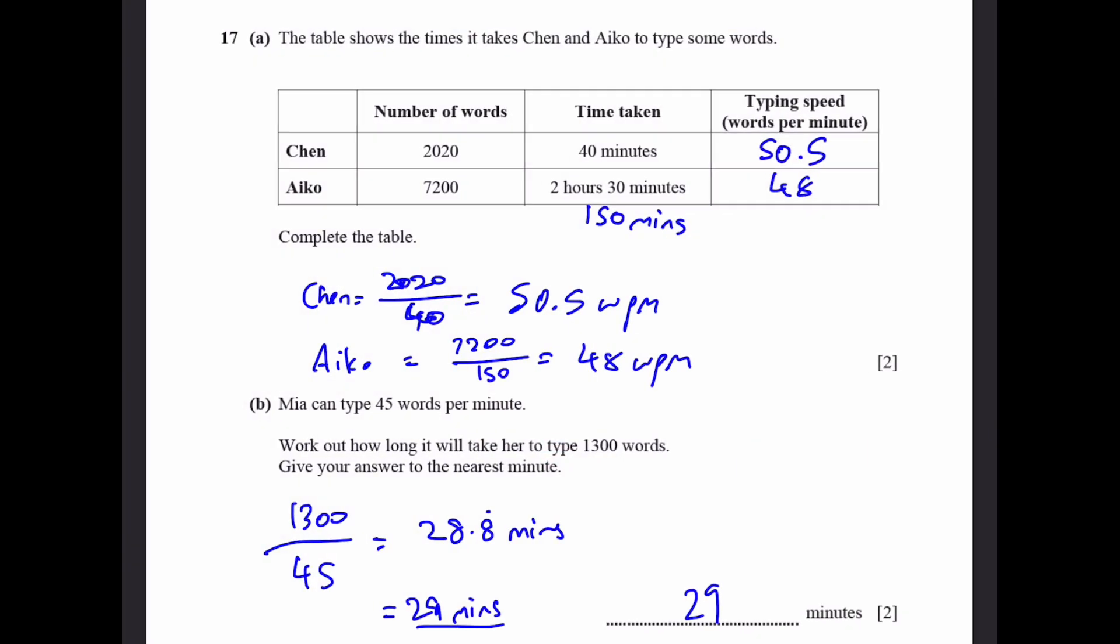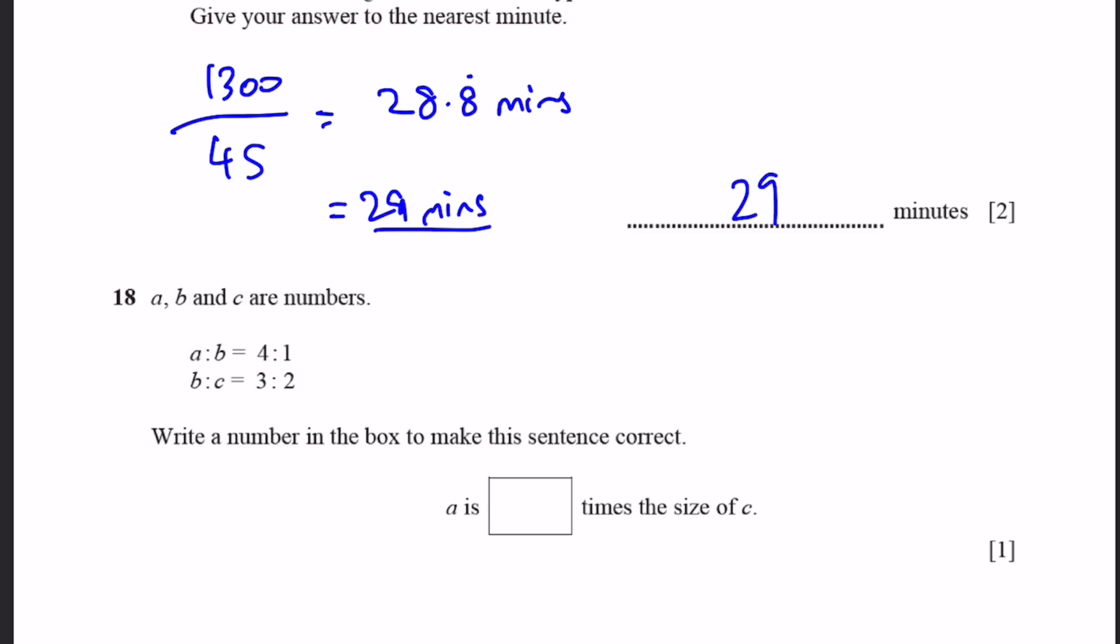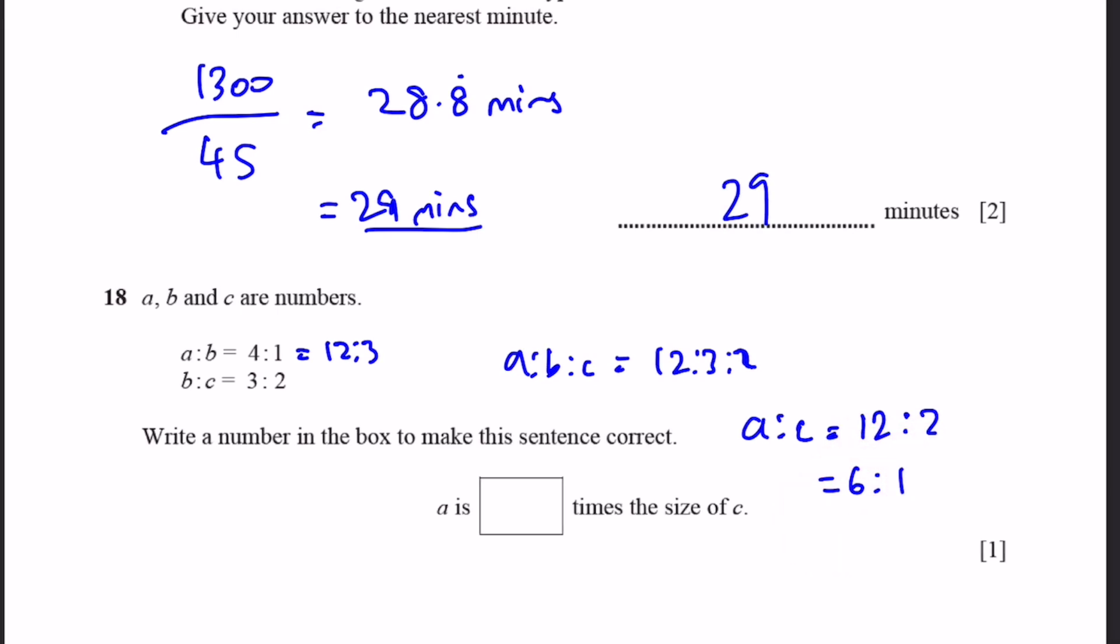Question 18. A, B, and C are numbers. A is to B is 4 is to 1, and B is to C is 3 is to 2. Write a number in the box to make the sentence correct. A is dash times the size of C. A is to B is 4 is to 1. This can be written as 12 is to 3 when you multiply both sides by 3. A is to B is to C can be written as 12 is to 3 is to 2. So, A is to C equals 12 is to 2, which equals 6 is to 1. That means A is 6 times the size of C.